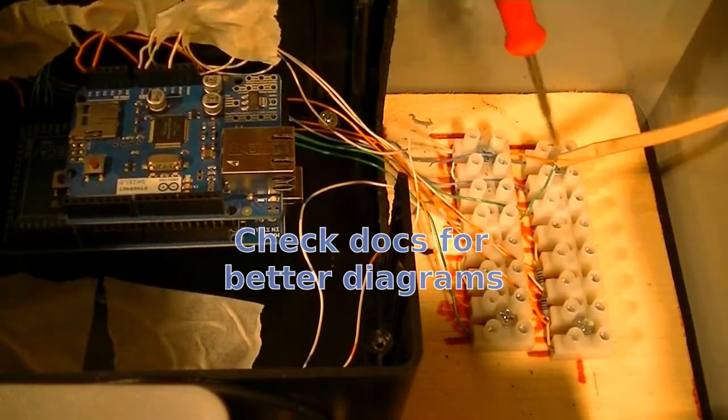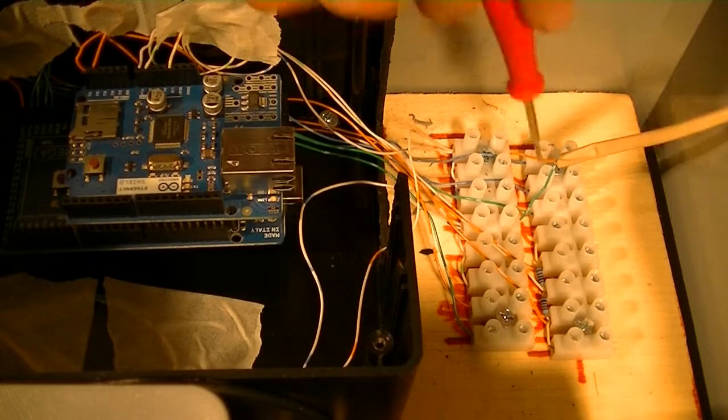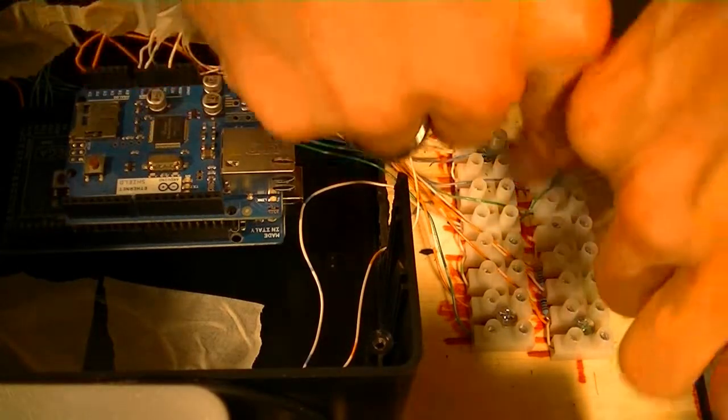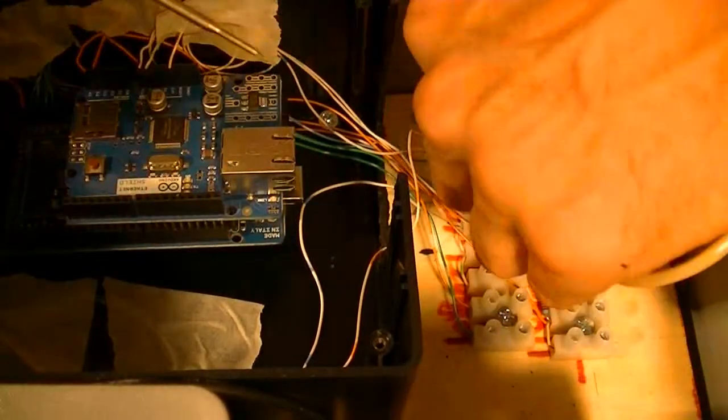And so this blue one right here is your analog out. You're going to want to plug that into one of the analog outs for the sensors. Let's go ahead and plug it into the blue one.